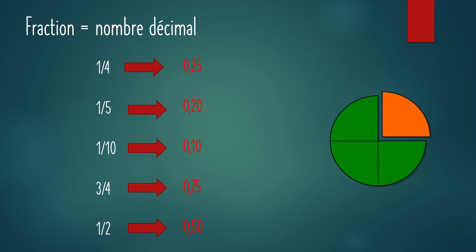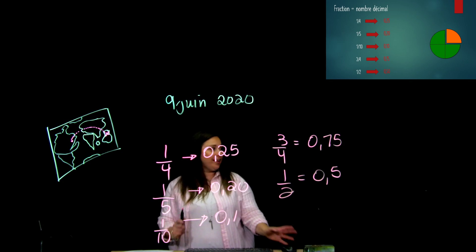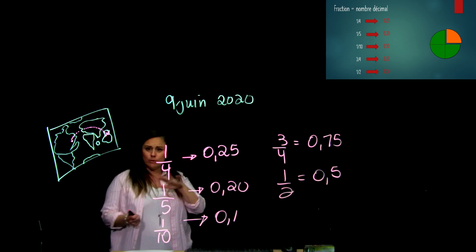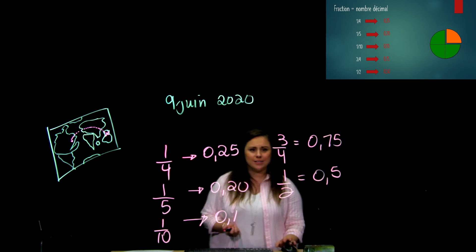Alors, je te les affiche à l'écran, puis je veux que tu les écrives dans ton cahier, c'est important. Alors, un quart, c'est égal à 0,25. Un cinquième, je l'apprends par cœur, 0,20. Un dixième, c'est facile, c'est 0,1 ou 0,10. Ensuite, trois quarts, c'est 0,75, c'est comme 3,25 sous. Et une demi, c'est 0,5 ou 0,50. Alors, c'est important que vraiment tu tires fort, puis que tu le mémorises, comme tes tables de multiplication.